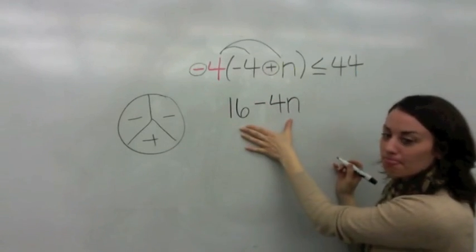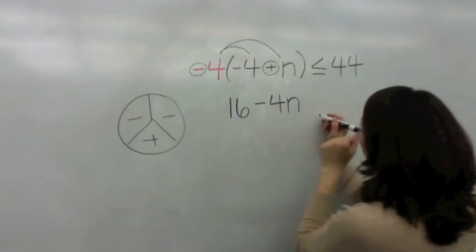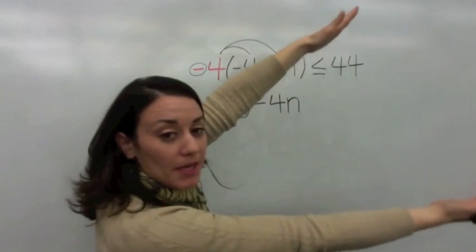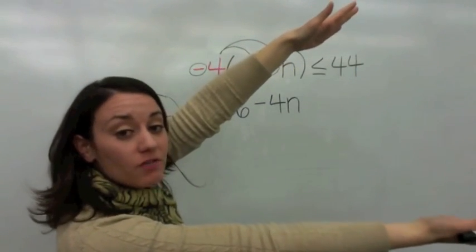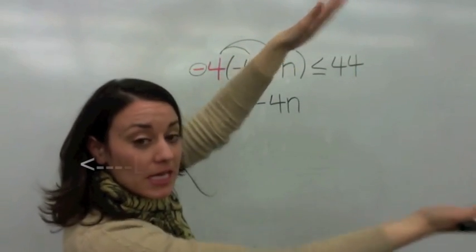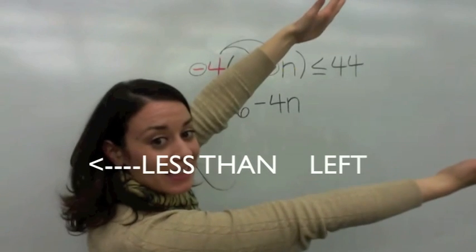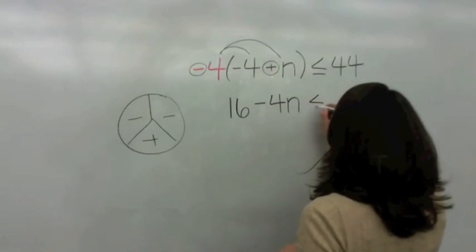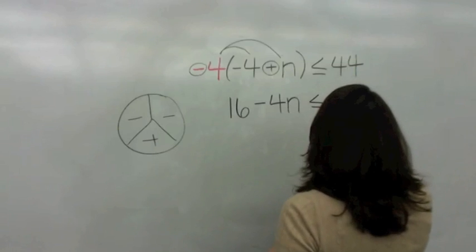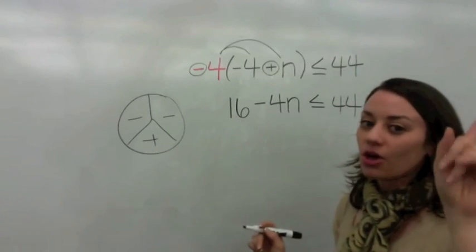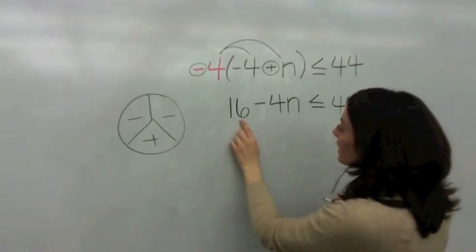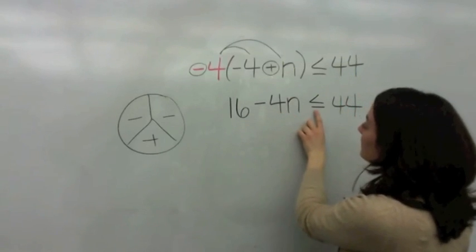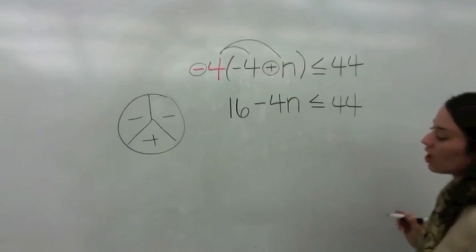Bring your hands in the direction of the inequality. Make your hands. Say less than left. Remember, it goes to the left. So you're going to say less than or equal to 44. Your inequality, read it with me, is 16 minus 4n is less than or equal to 44. Great job.